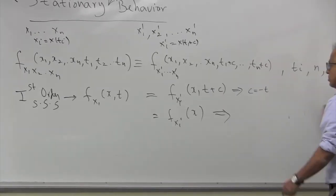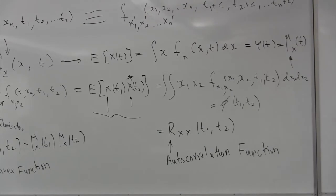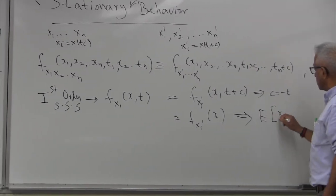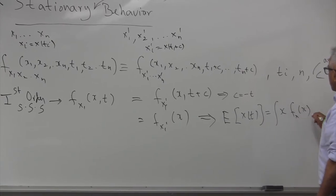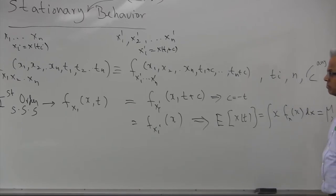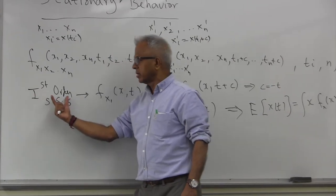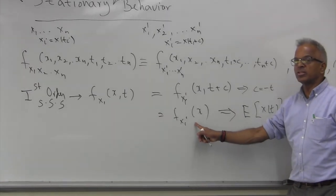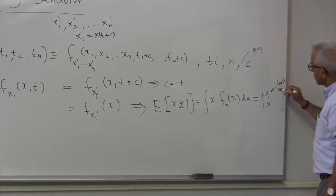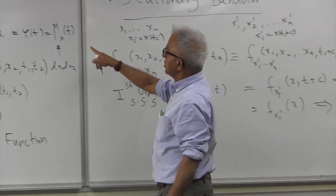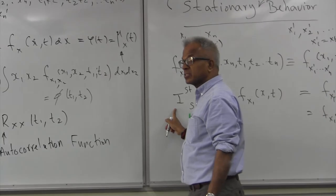So the density function is independent of time — that is one consequence. In that case, the mean of the process, which is the expected value of x(t), equals the integral of x times the density function. But now the density function is independent of t, so you get this to be a constant. So if the process is first order strict sense stationary, the density function is independent of time and the mean is a constant.